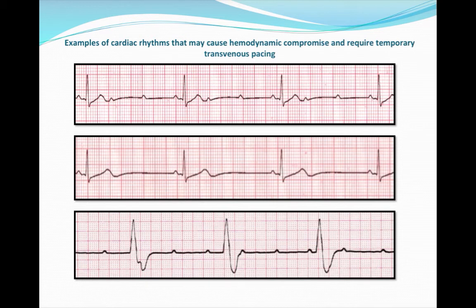We've already done transcutaneous pacing, and now we want to move forward with transvenous pacing. With this top rhythm, what do you notice? More P's than QRS's — we have a block of some sort. Looking at the PR interval, it remains fixed and constant. So this is a second degree type 2.